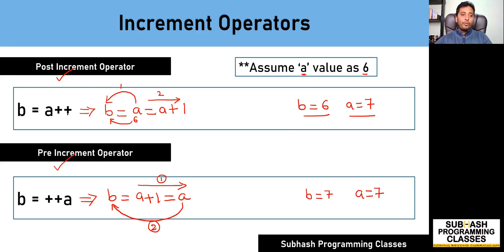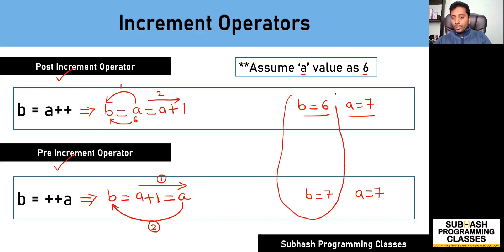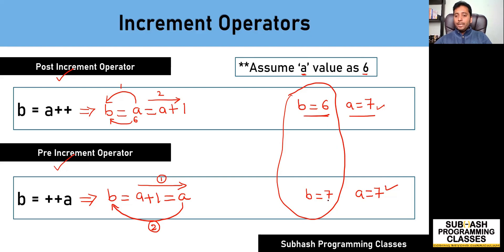As you can see, the difference between a++ and ++a comes into picture when you actually store its value into some other variable b. In either case, a value would be 7, whereas b value with the post increment operator becomes 6, while b value with the pre increment operation becomes 7.